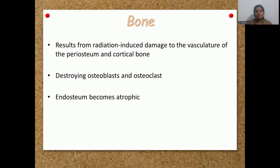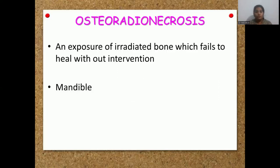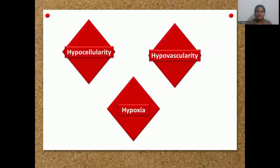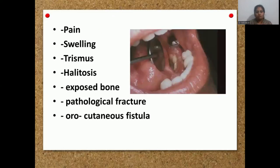Next is the effect on bone. Radiation can cause damage to the vasculature, causing destruction of osteoblasts and osteoclasts, and endarteritis of the arterioles. All these can lead to osteoradionecrosis — an exposure of irradiated bone which fails to heal without intervention. The mandible is mostly affected by osteoradionecrosis. It is characterized by hypocellularity, hypovascularity, and hypoxia. Clinically, exposed bone is seen within the oral cavity. There can be pain, swelling, trismus, halitosis, pathological fracture, and orocutaneous fistulas.